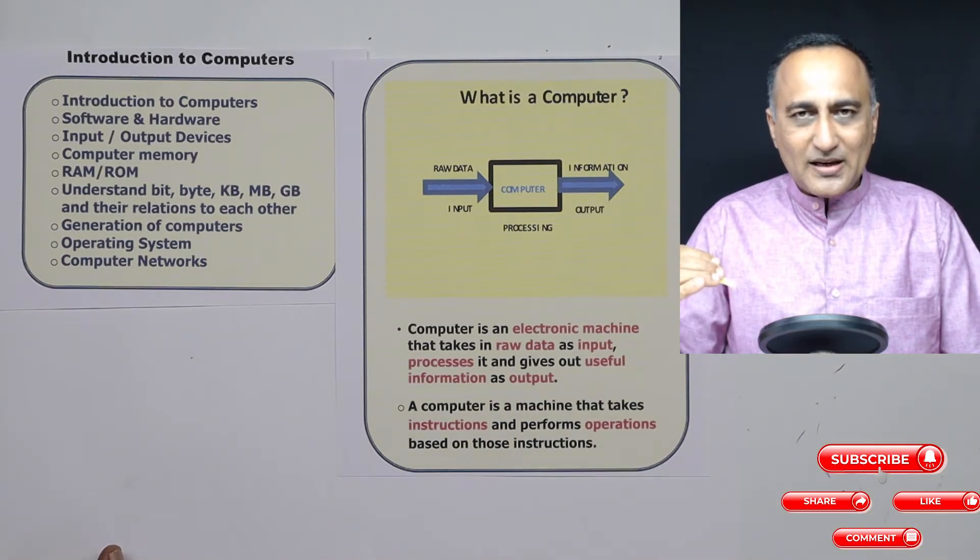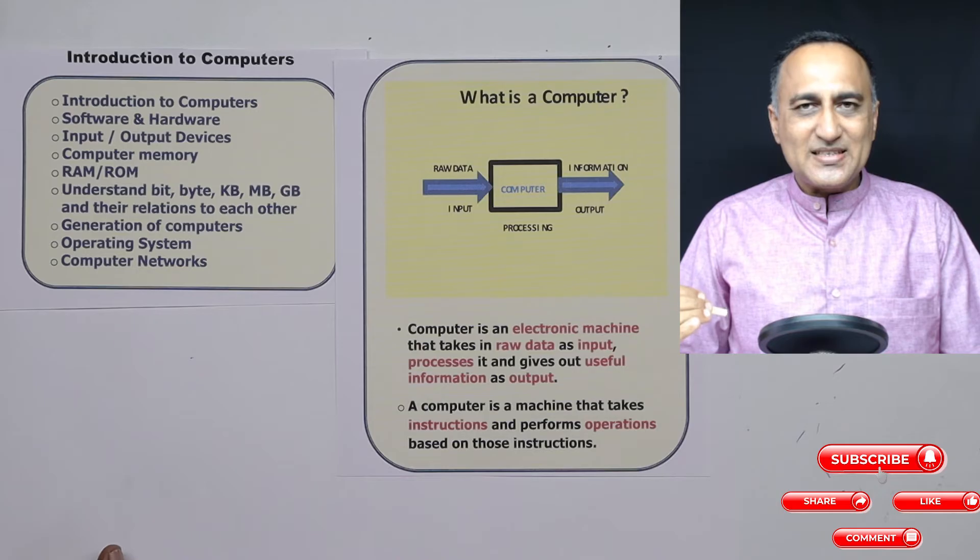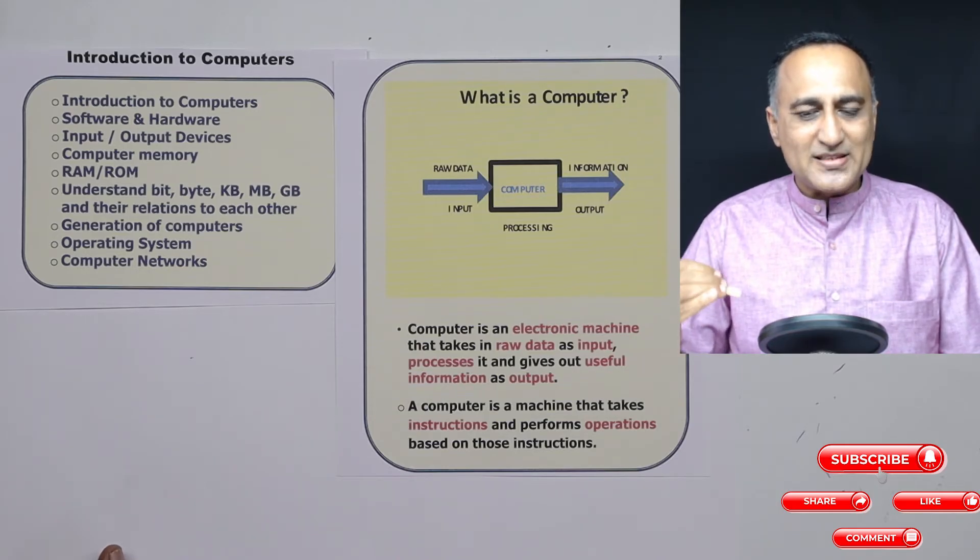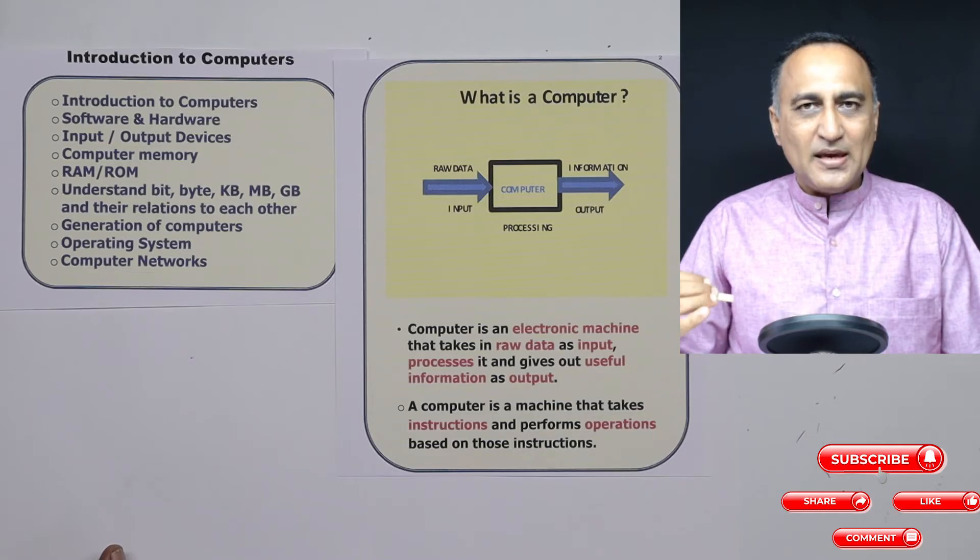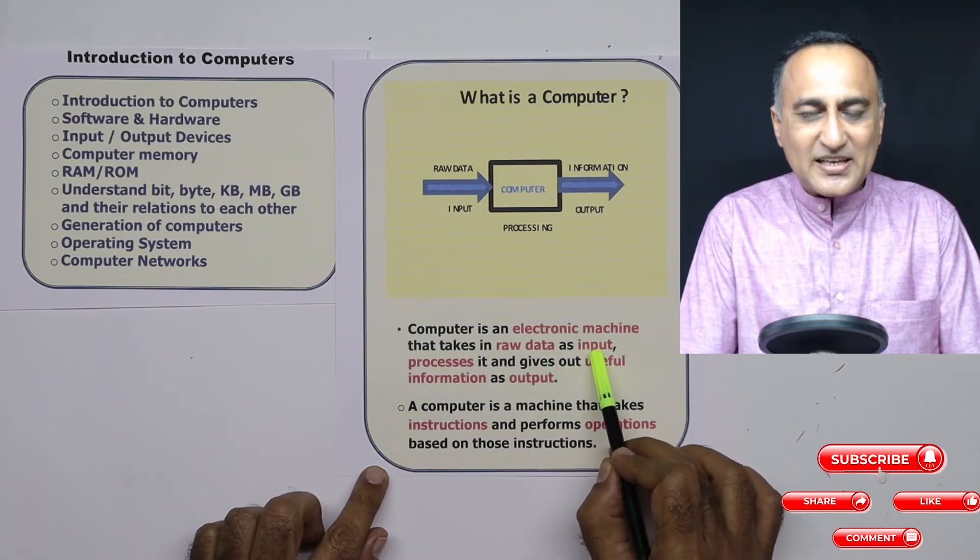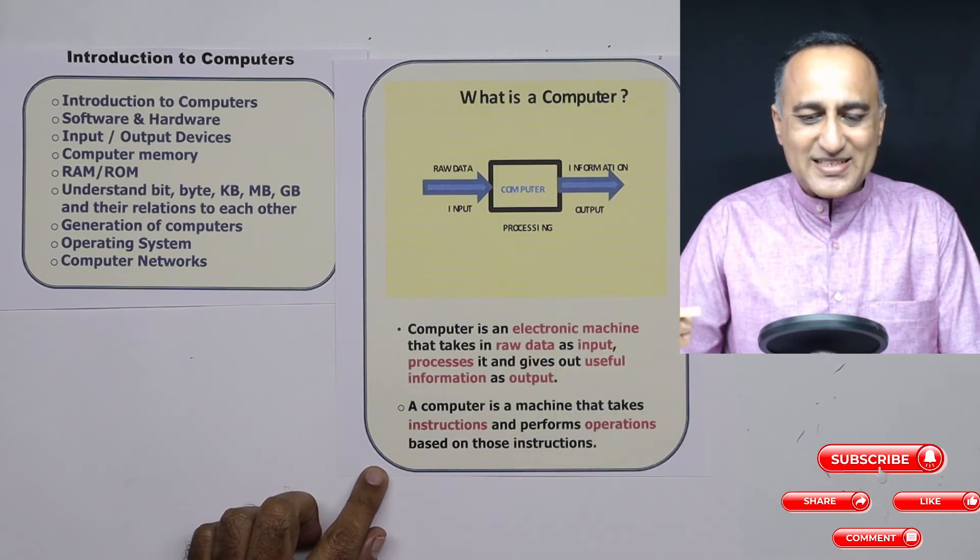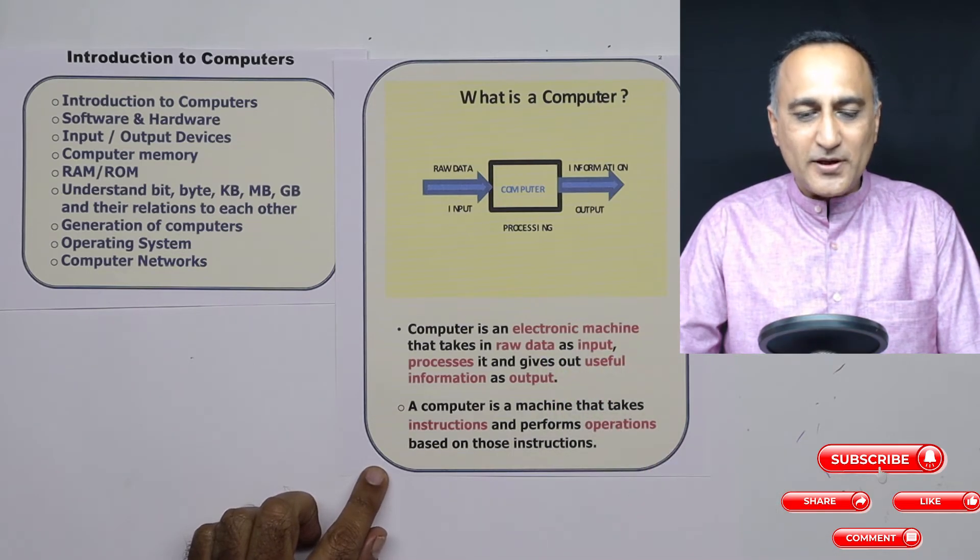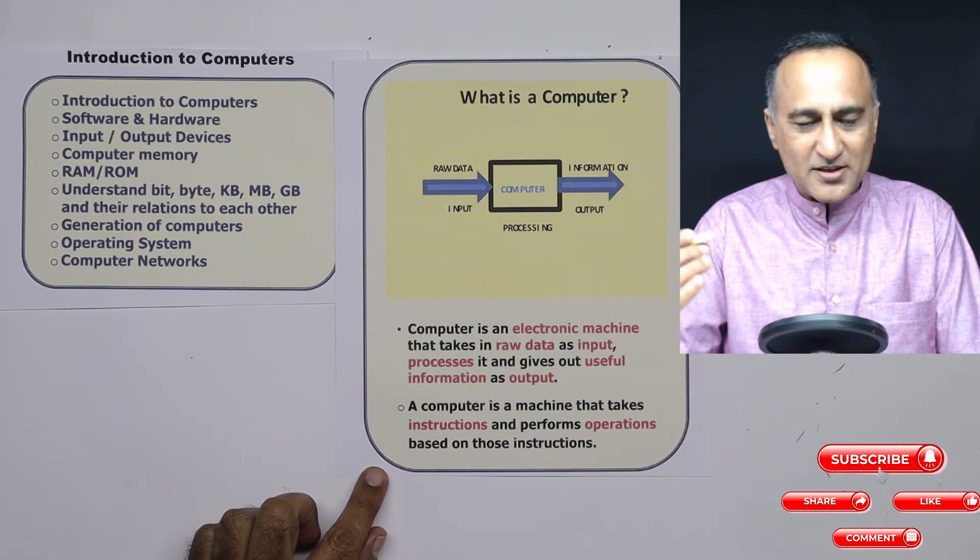A computer we are going to discuss is an electronic machine. First thing, a computer is a machine - it's an electronic machine that takes in data as input, processes it, and provides useful information. Let me help you explain and understand what it is.